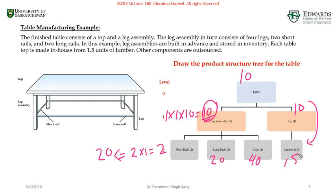Now, for an example, let's say you already have five leg assemblies as on-hand inventory. Then how many leg assemblies, short rails, long rails, and legs are required?